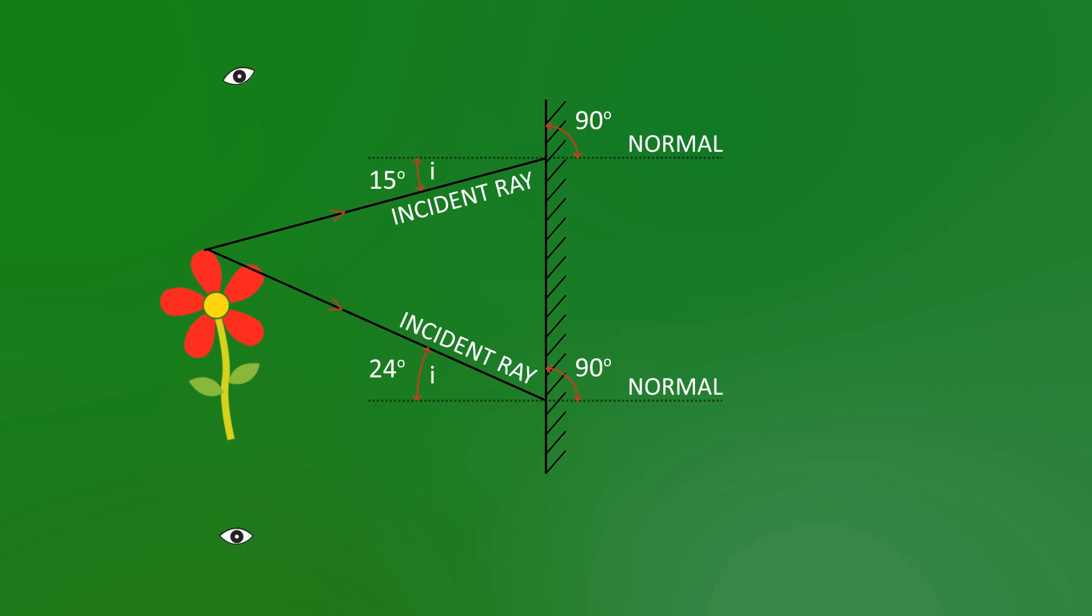Now, our reflected rays will bounce off at the same angle that the incident rays hit, just like a bouncy ball would off a table. This is the law of reflection. Angle I must equal angle R.